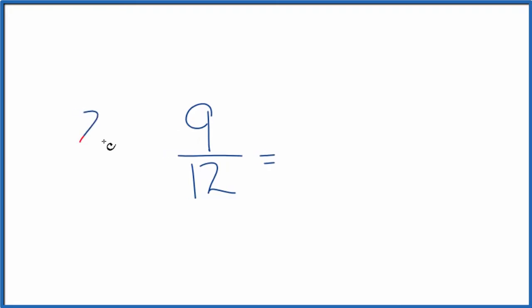But instead of just 1, let's call it 2 over 2. Because 2 divided by 2, that's 1. So we're still just multiplying by 1. We don't change the value, just the numerator and the denominator.